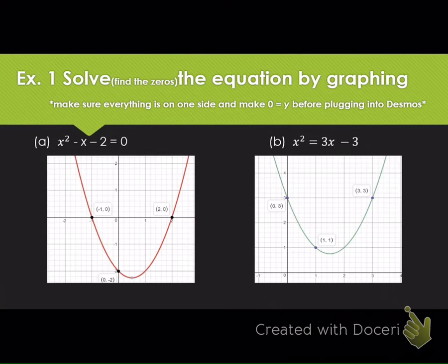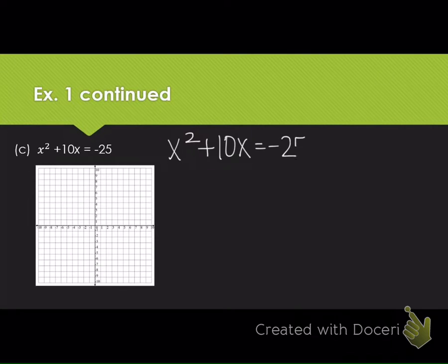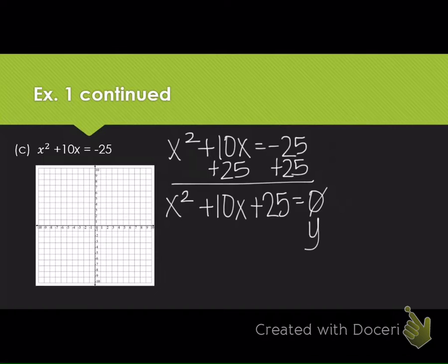Now let's look at letter C: x squared plus 10x equals negative 25. Everything is not on one side, so we fix that first. We add 25 to both sides, and since none of the terms are like terms, we get x squared plus 10x plus 25 equals 0. When you plug this into Desmos, the 0 has to be a y. Hit pause, plug it in, and transfer what you see onto your graph.